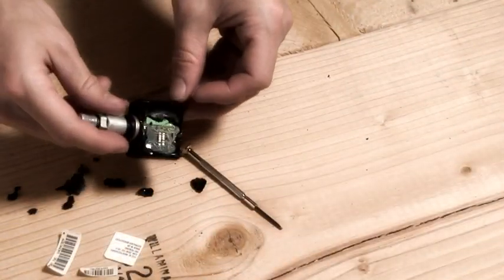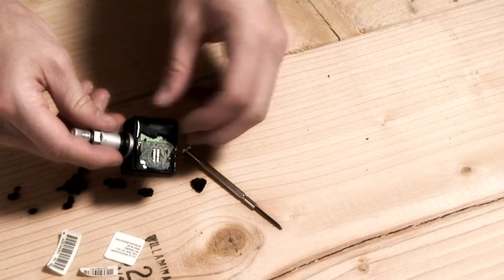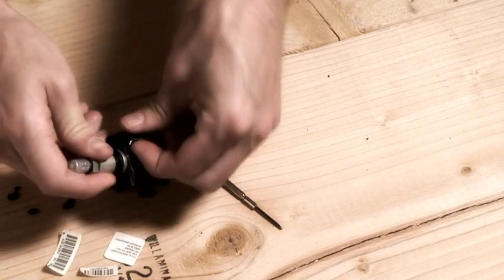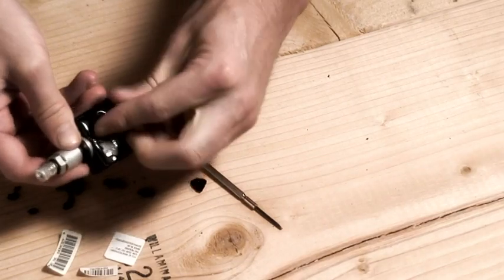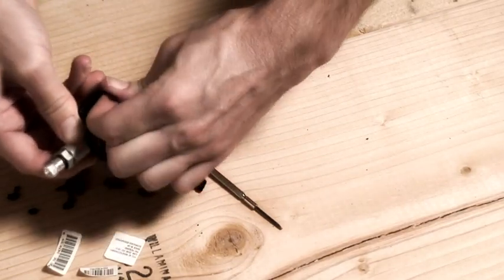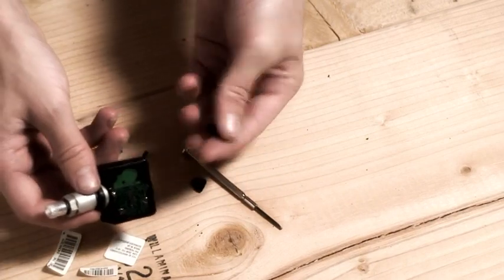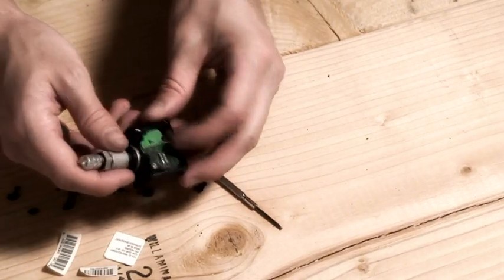Another way you can pick this material out is with your fingernail. It can become a little uncomfortable but it's definitely less chance of scoring the circuit board. As you can see I just dug that chunk out right there with my index finger.